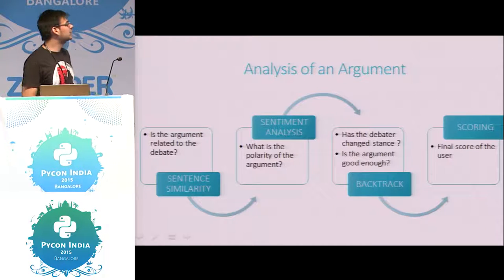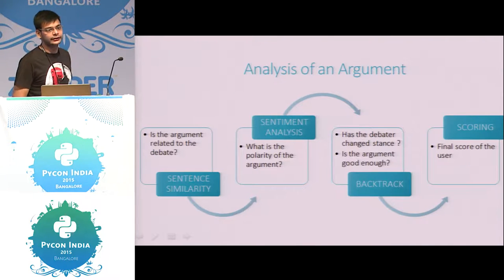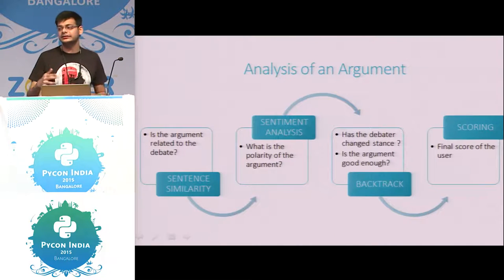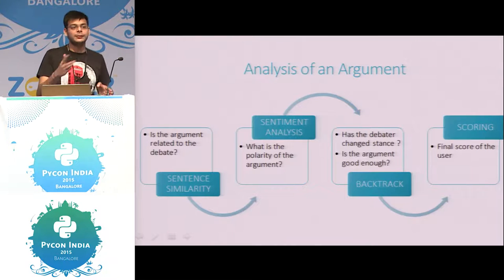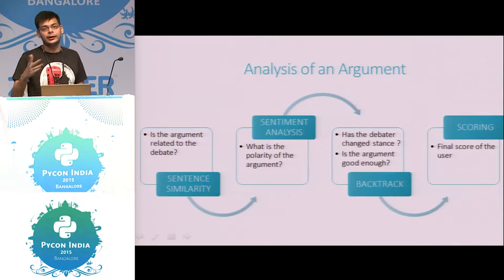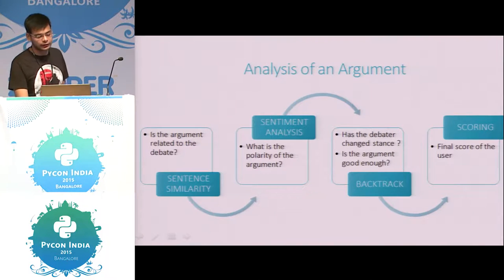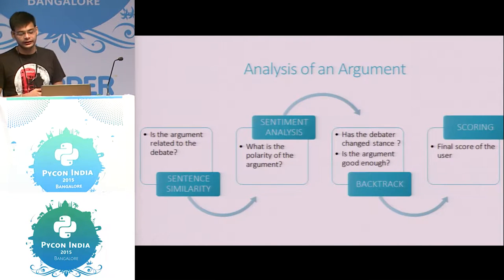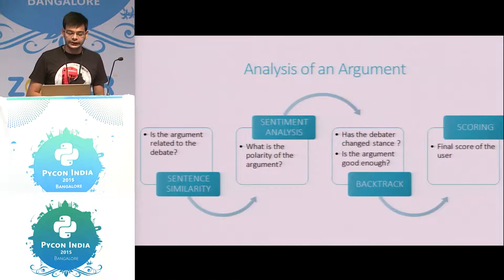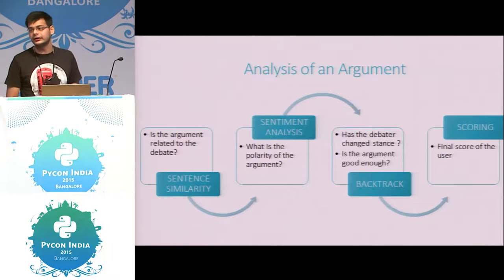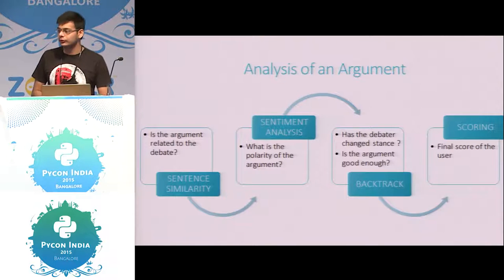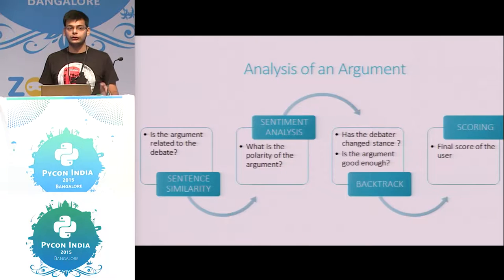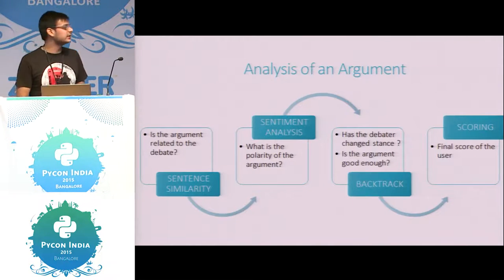The first part — whether an argument is related to the debate or not — is handled by sentence similarity. If someone is talking about Batman, the counter-argument should also be about Superman or Batman, not about Iron Man in a completely different context. The second pillar is sentiment analysis, which judges the polarity of the argument — positive, negative, or neutral. The third step is backtracking, where you check whether the debater changed stance from positive to negative during the debate. And the final pillar is how you score the complete criteria.